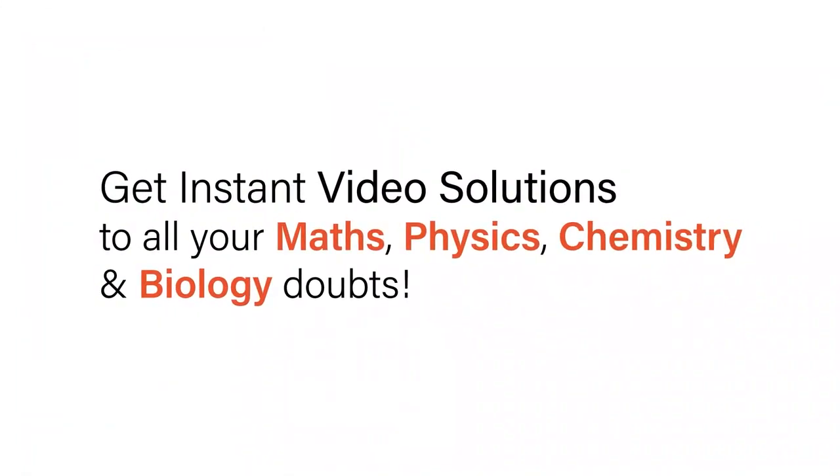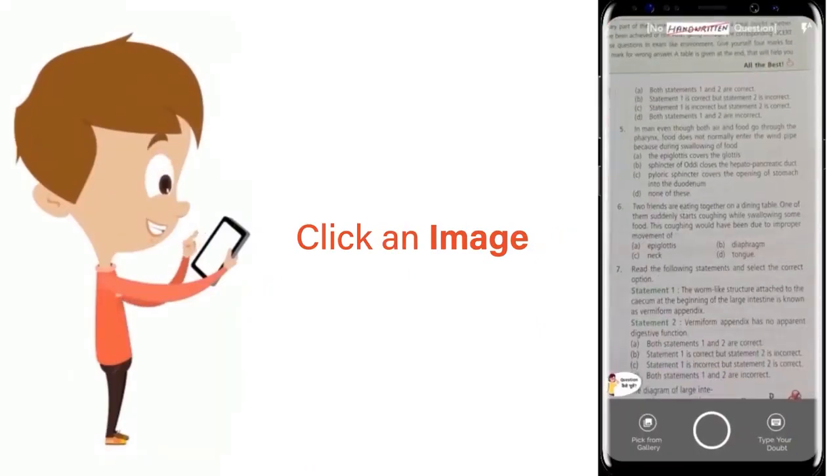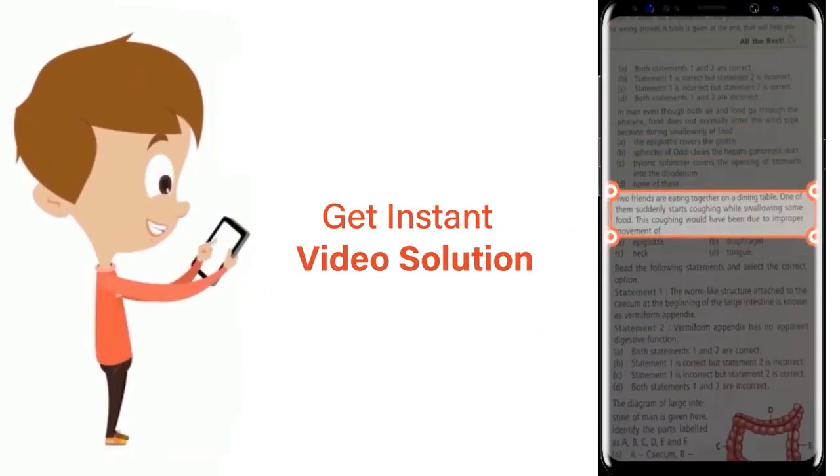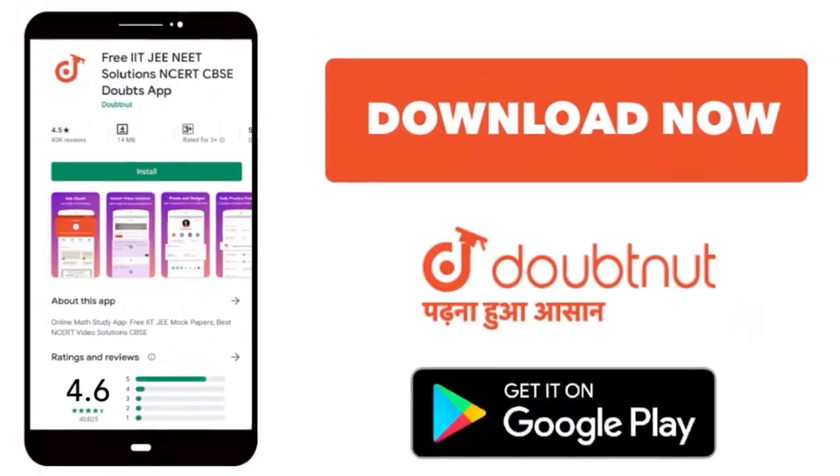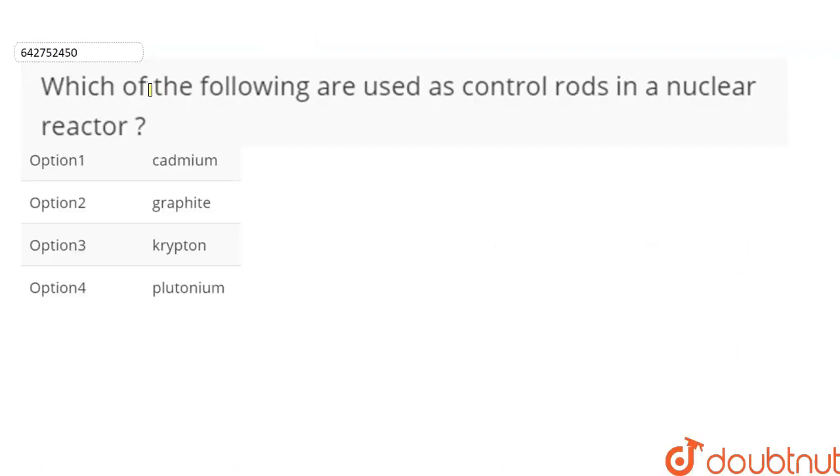With Doubtnut, get instant video solutions to all your maths, physics, chemistry, and biology doubts. Just click the image of the question, crop it, and get instant video solution. The question asks which of the following are used as control rods in a nuclear reactor. Option one is cadmium, option two is graphite, option three is krypton, and option four is plutonium.